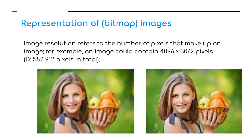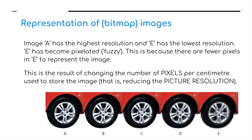Image resolution refers to the number of pixels that make up an image. For example, an image could contain 4096 by 3072 pixels — multiplying those together gives over 12 million pixels, with each one potentially a different color. Five images of the same car wheel are shown: image A has the highest resolution and the most number of pixels, while image E is lower quality with far fewer pixels and has become pixelated or fuzzy. This is the result of reducing the number of pixels per centimeter used to store the image, that is reducing the picture resolution.